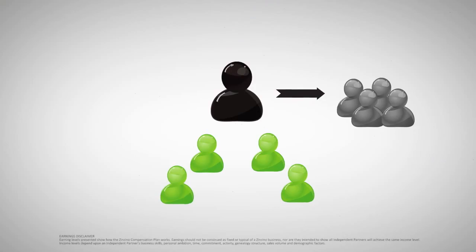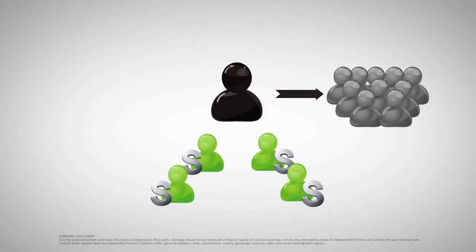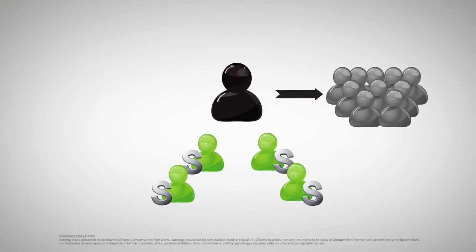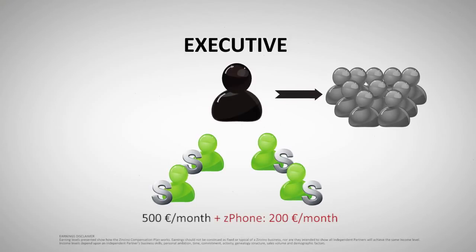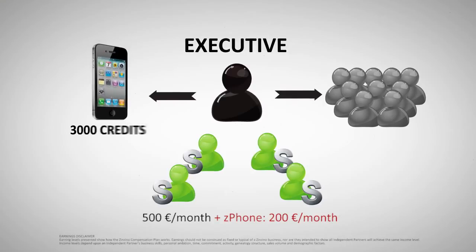Would you like a Z phone bonus? Increase your personal customer number to 10 and help four people in your team achieve active silver. You've now earned the title executive. This will give you a commission and an additional Z phone bonus.